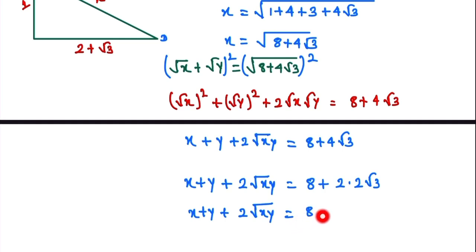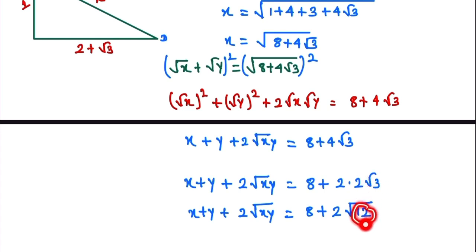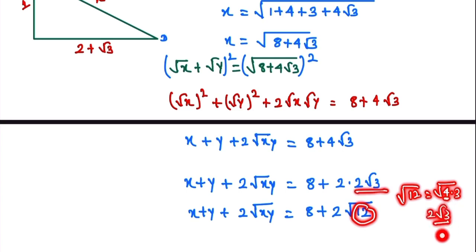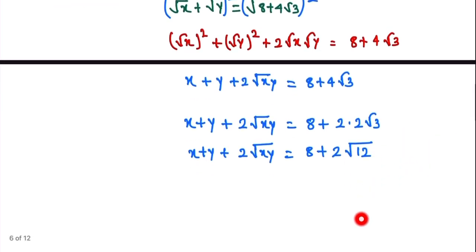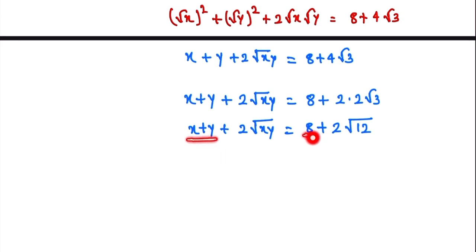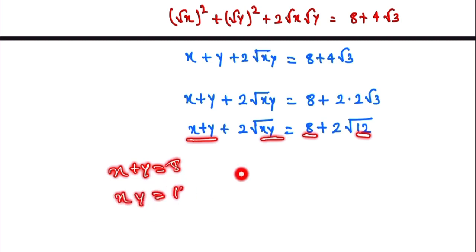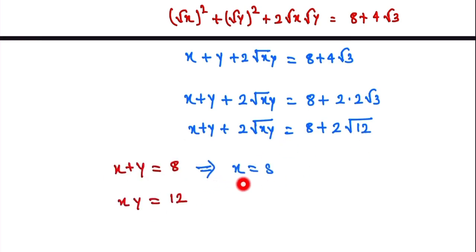We note that 4√3 can be written as 2√12, since √12 = 2√3. Now equating the rational and irrational parts separately: x + y = 8, and 2√(xy) = 2√12, so xy = 12.